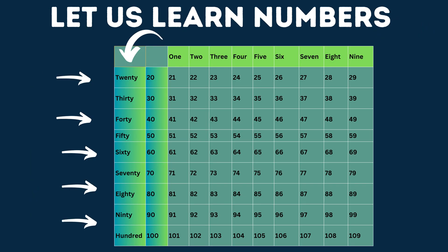Next, I will explain how to read the next numbers. The vertical line shows 20, 30, 40, 50, 60, 70, 80, 90, and 100. The horizontal line shows 1, 2, 3, 4, 5, 6, 7, 8, and 9.